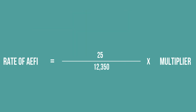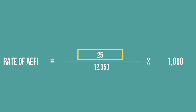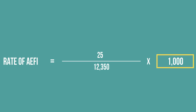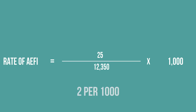In this example, we will use a multiplier of 1,000 to calculate the febrile seizure rate per 1,000 doses in the district. When we divide the number of AEFI cases (25) by the number of doses administered (12,350) and multiply by 1,000, we get a rate of about 2 febrile seizure cases per 1,000 doses for this district.